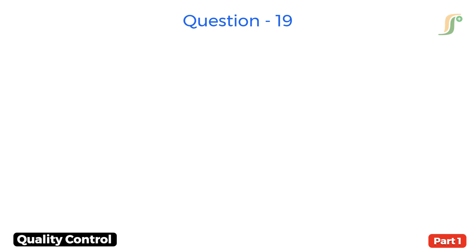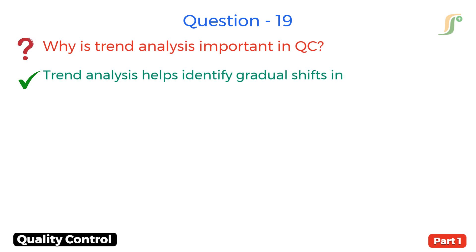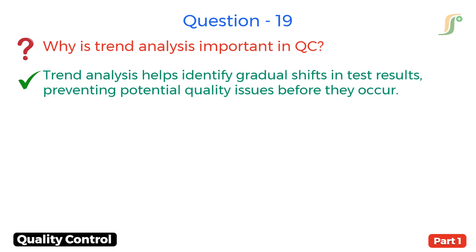Question 19. Why is trend analysis important in QC? Answer. Trend analysis helps identify gradual shifts in test results, preventing potential quality issues before they occur.